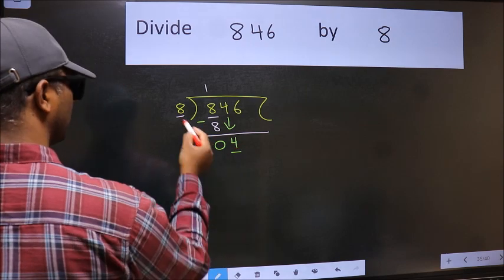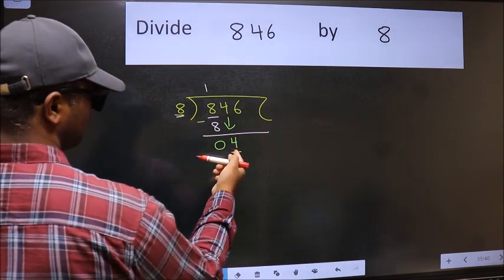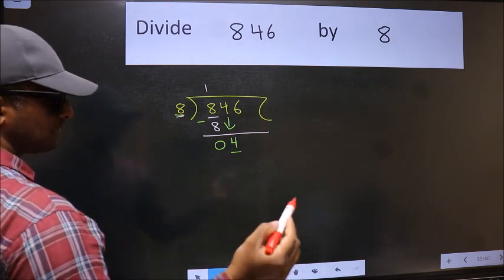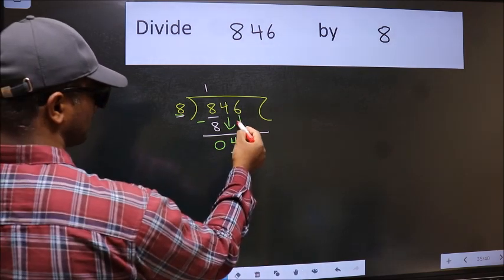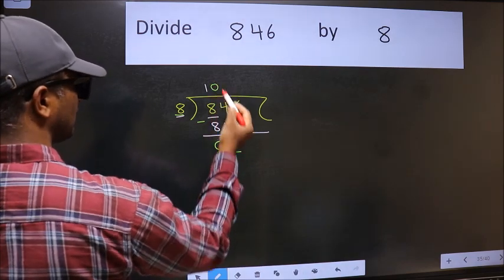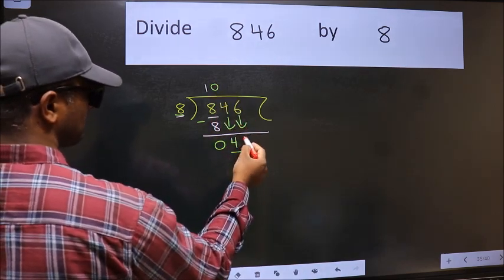Now here we have 4 and here 8. 4 is smaller than 8, so we should bring down the second number. And the rule to bring down the second number is we should put 0 here, then only we can bring this number down.